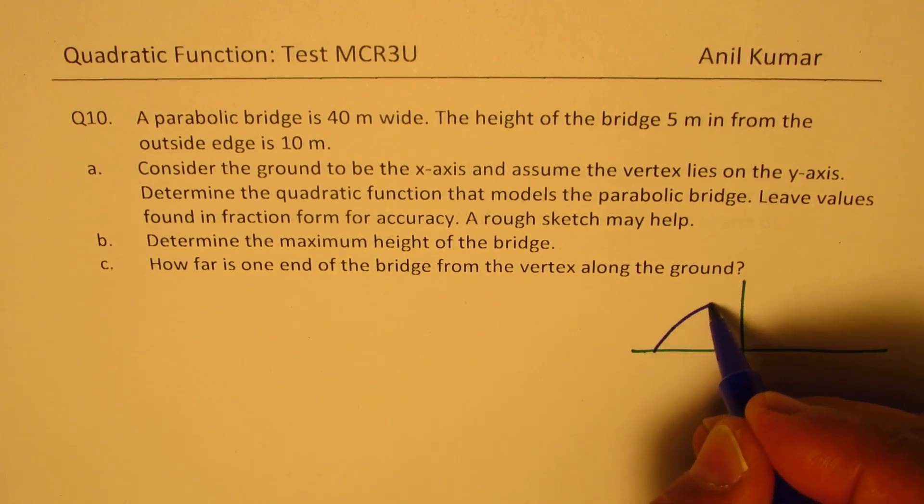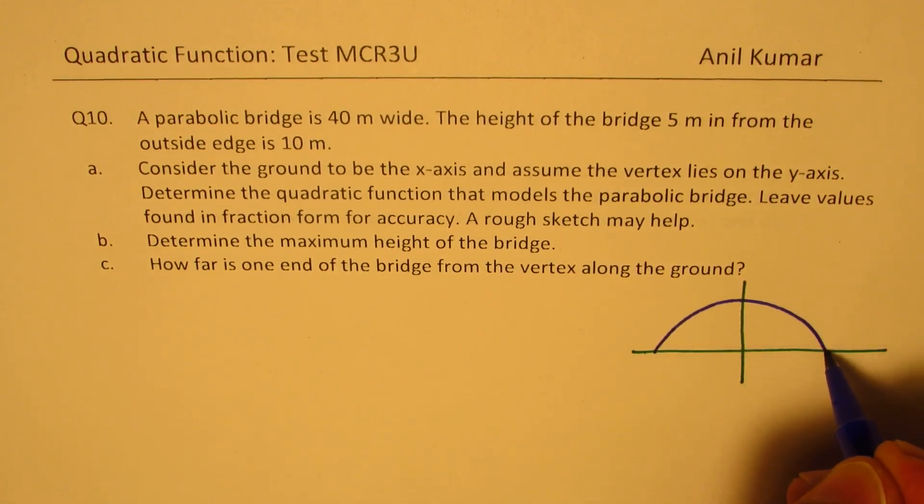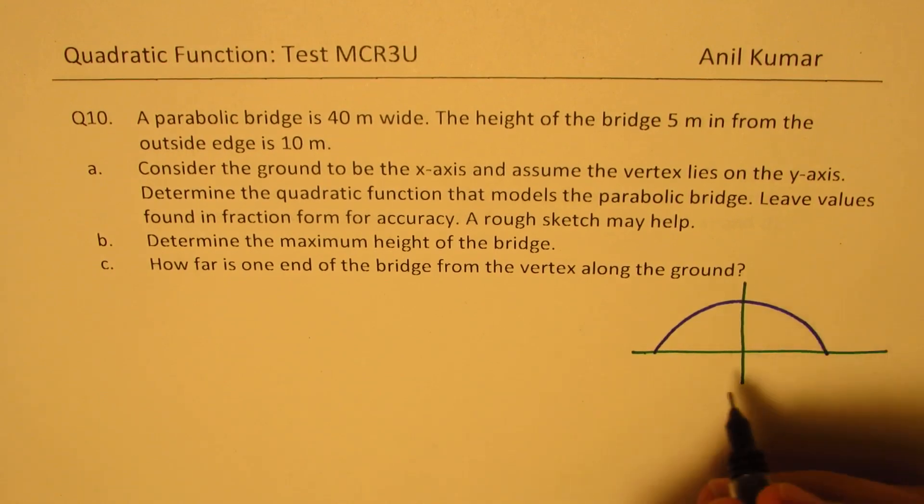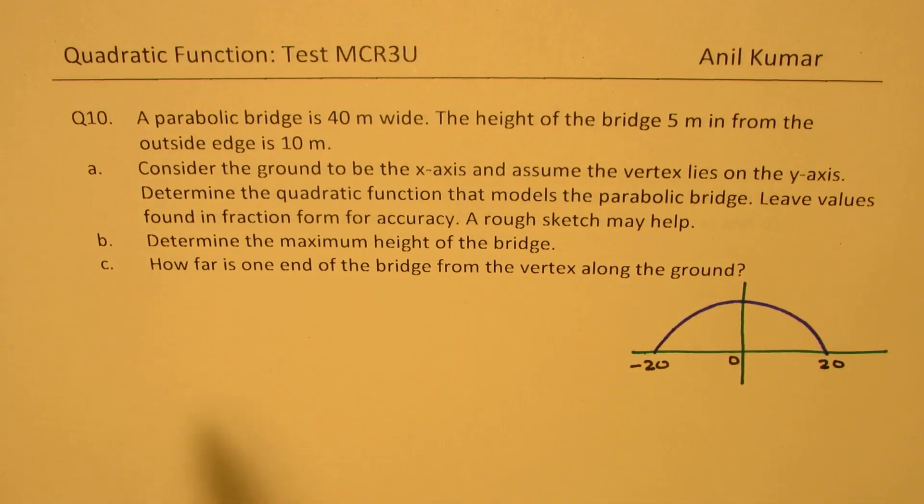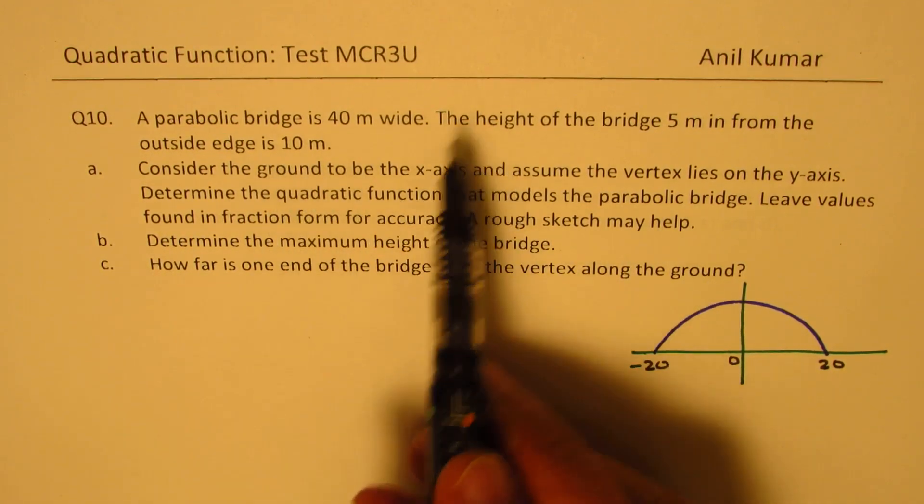So basically now we are looking into this situation. Vertex lies, that means the highest point. Correct. This was 40 meters. So this is minus 20 and this is 20. This makes sense to you. Correct.